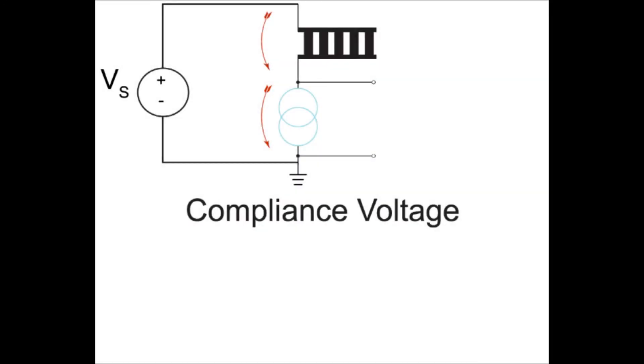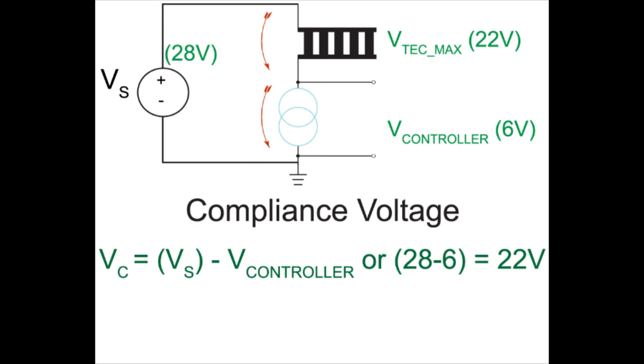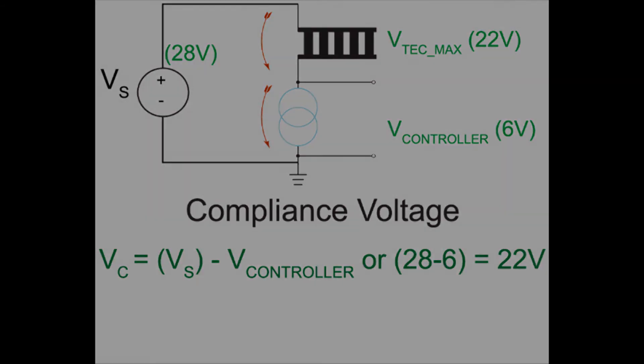Compliance voltage is the maximum voltage available to the thermoelectric or resistive heater and is typically specified at full current. If a 28-volt supply is used with a temperature controller that requires 6 volts, the compliance voltage is then 22 volts. Reaching the compliance voltage limit impacts the controller's ability to keep the load at a stable temperature. For more details on thermoelectrics and compliance voltage, see Application Note ANTC15.